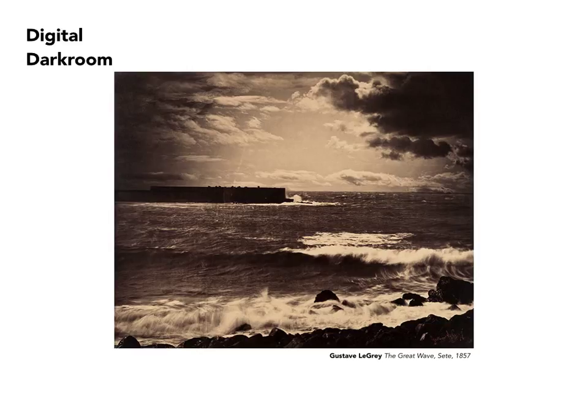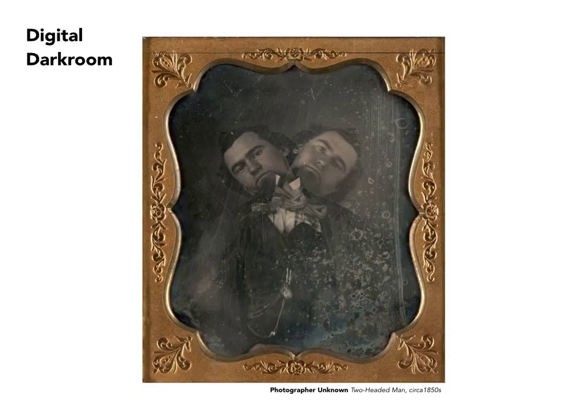This required manipulation of the print in the darkroom. Here we have, unless you choose to believe that this is in fact a photograph of a two-headed man, an early example of deliberate manipulation. The first image was taken with the man tilting his head either to the left or the right, and then it was exposed a second time after he had tilted it to the opposite side, thus giving us this crude notion of a two-headed person.